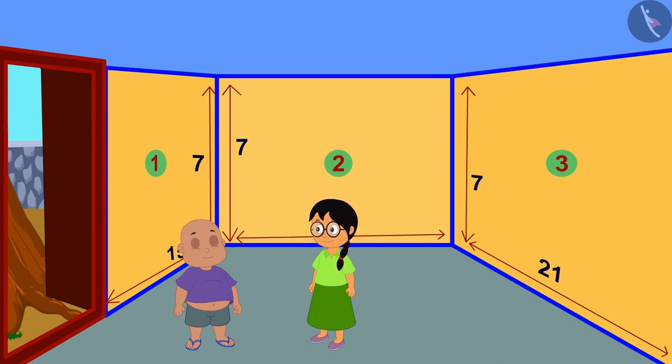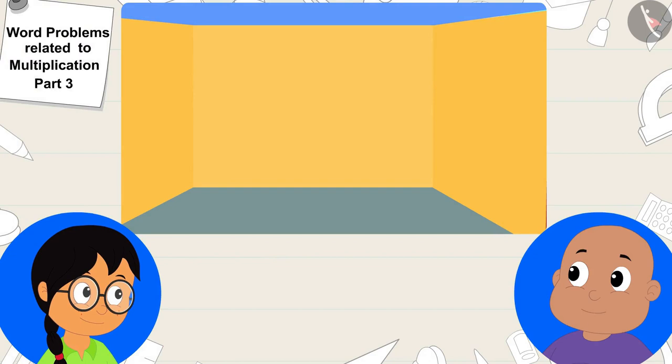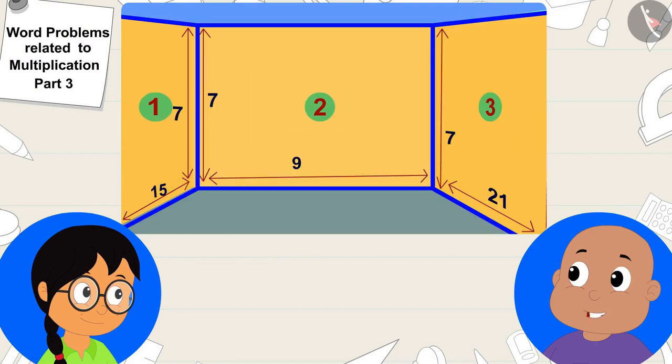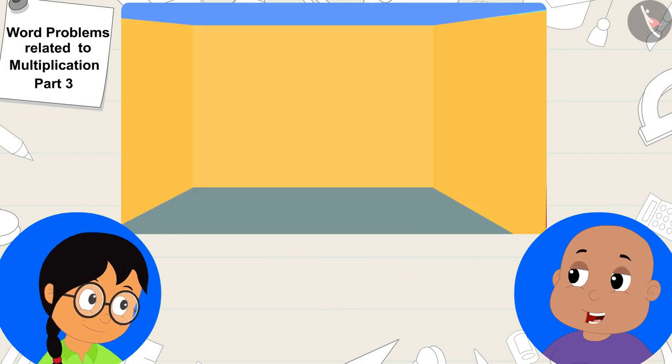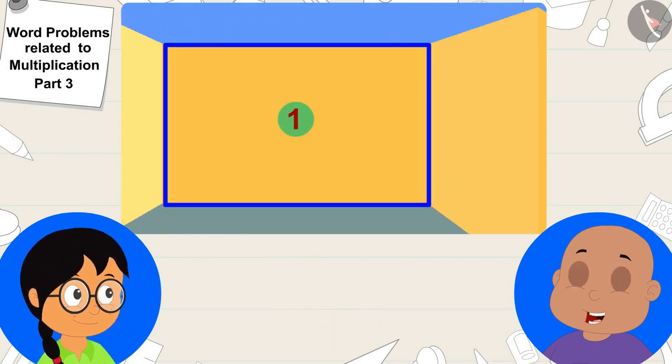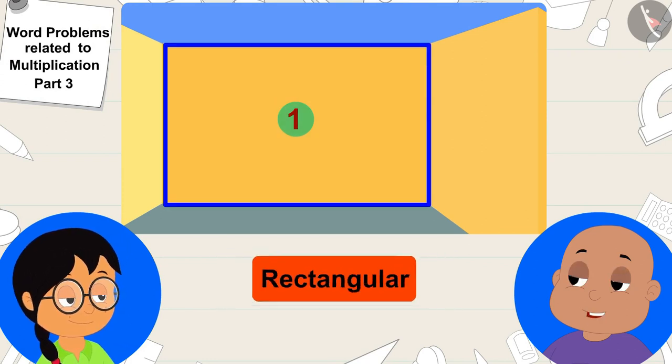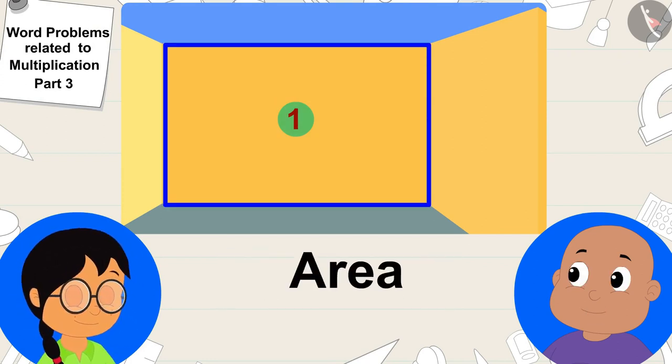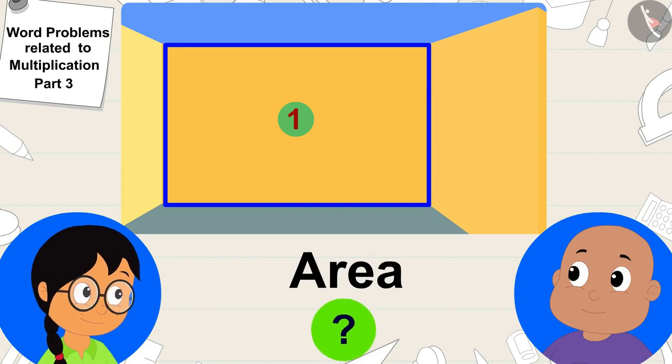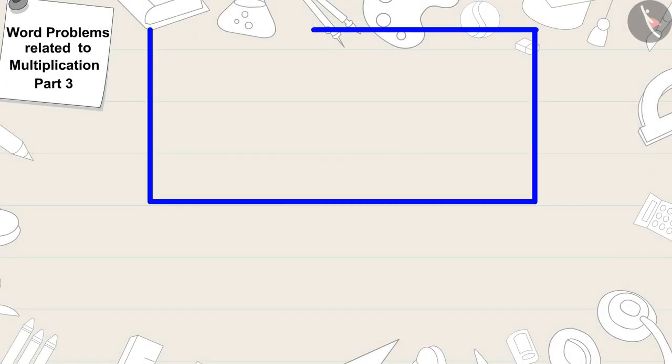Hmm, let's find it by finding the area of these three walls. Let's start with this wall first. This wall is rectangular, so how are we going to find its area, Bablu asked Meenu.